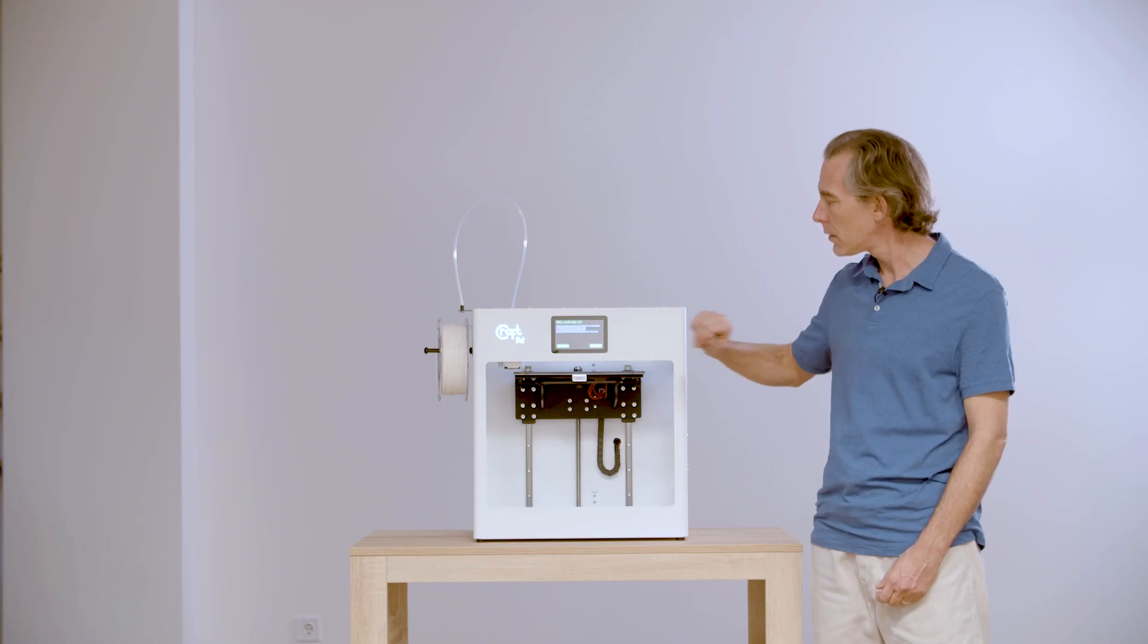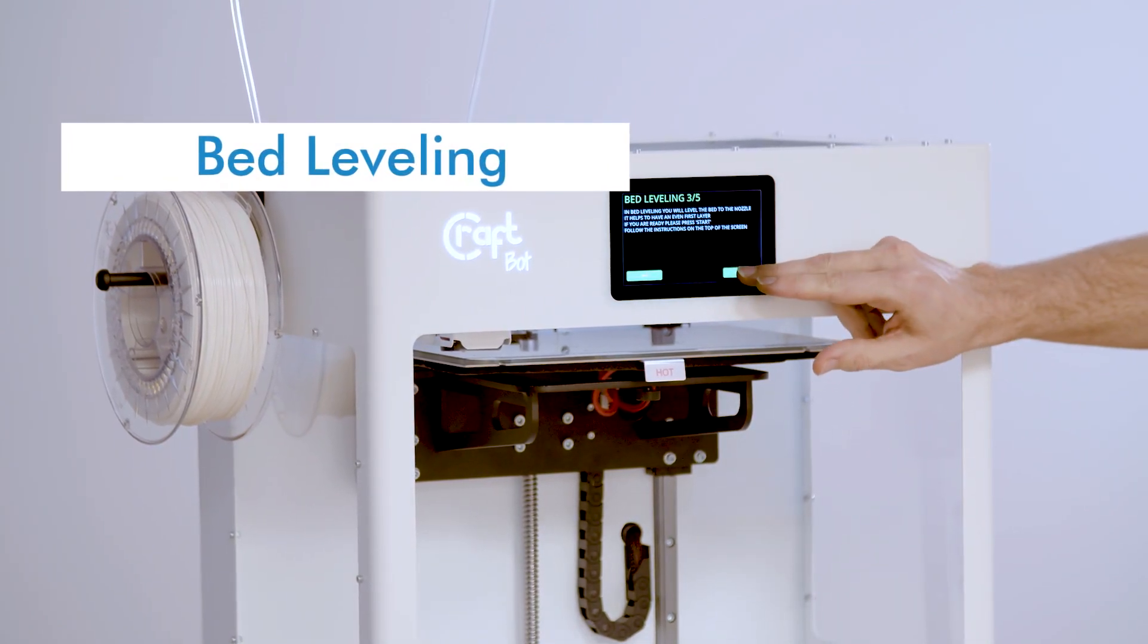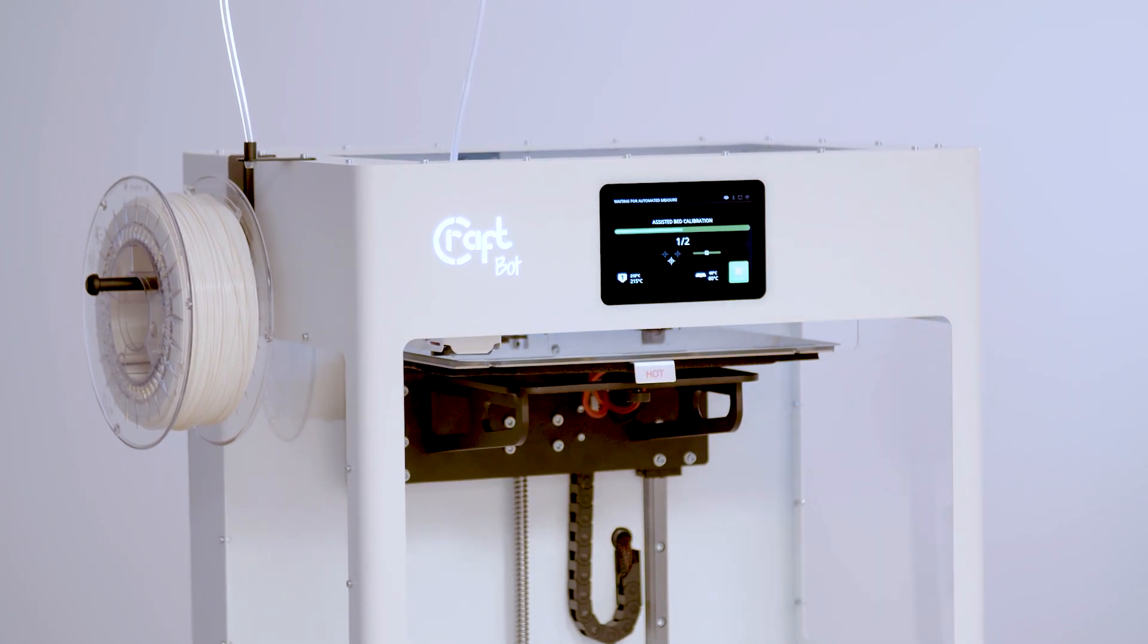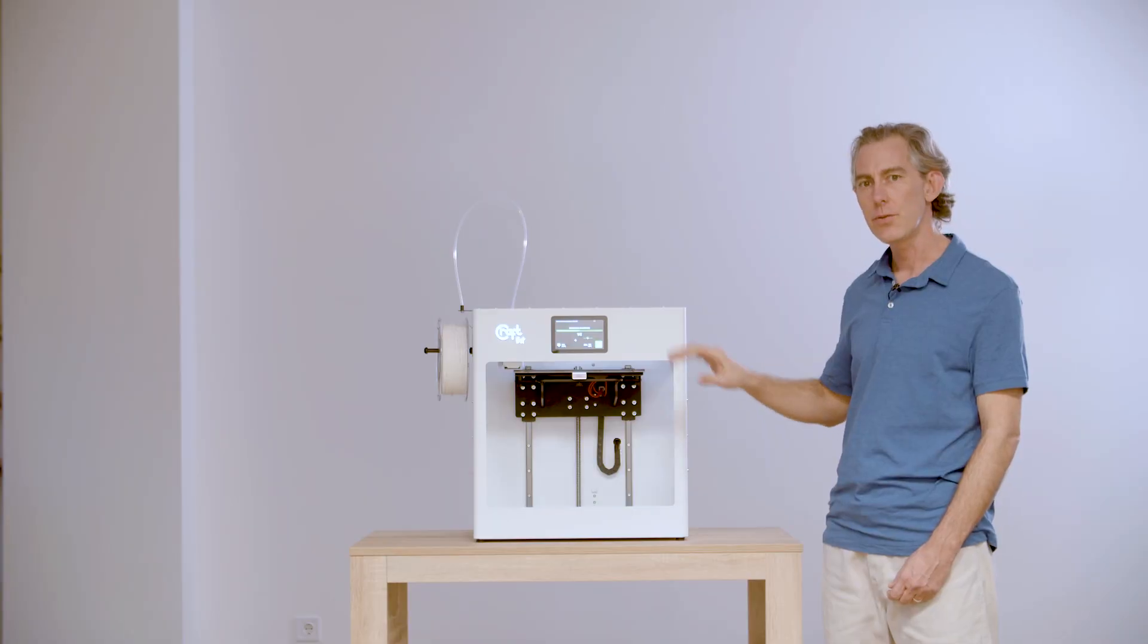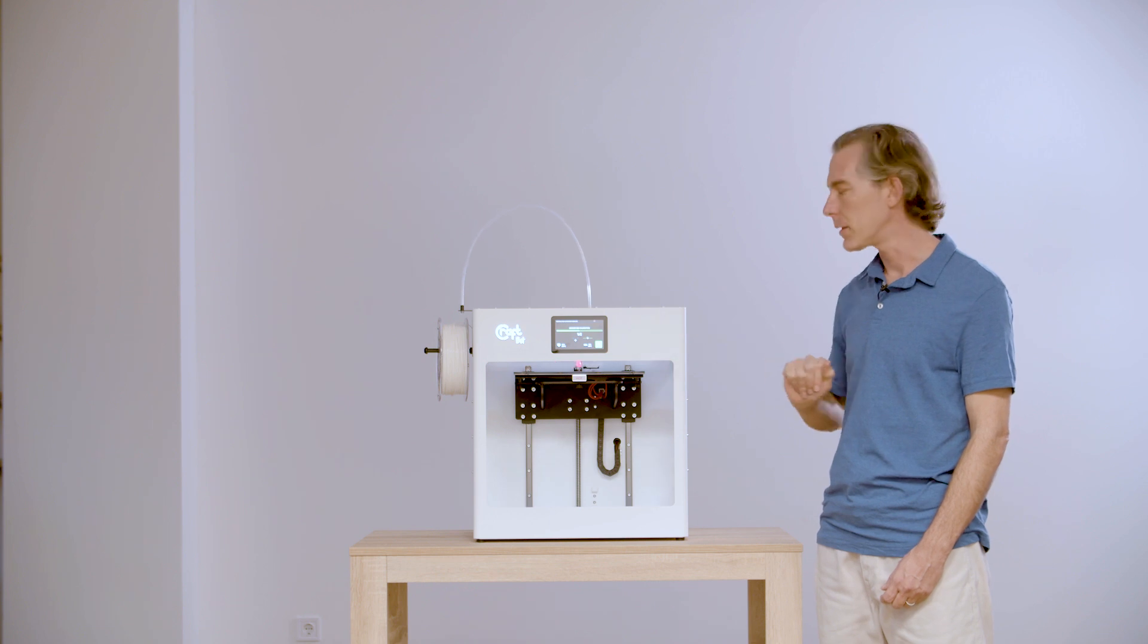To move on, we'll start the next section, which is bed leveling. From here, the wizard is going to guide you through turning the screws on the front and the back left and right so that you can get the bed perfectly level.